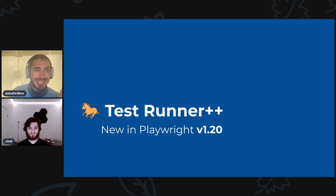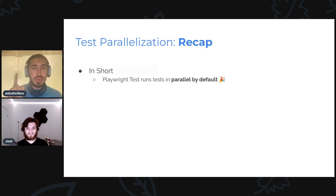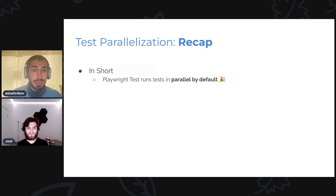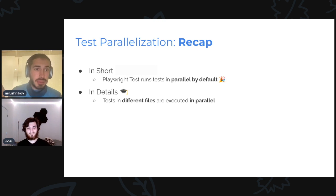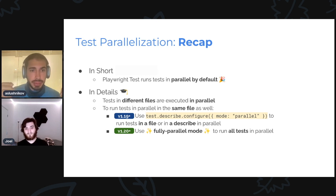Moving on. Looking at this runner running — first I want to talk about parallelization. Quick recap: if there is one thing you want to remember about Playwright test, it is that it runs tests in parallel by default. But what does it actually mean? It means that different files are executed in parallel. So if I have tests in the same file, they're not in parallel. But you can actually make it run in parallel. Last time we presented the new test.describe configure API that you can use to make either a whole file or some test suite run in parallel.